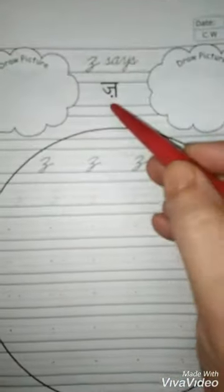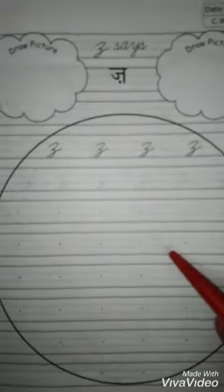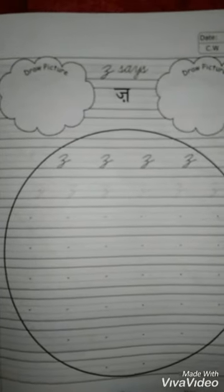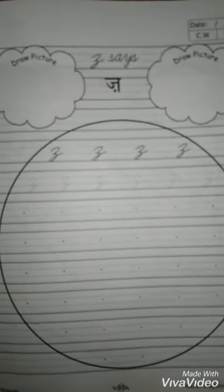Z says z. Z says z. Z says z, zero, zebra. Okay, its come sounds all finished.